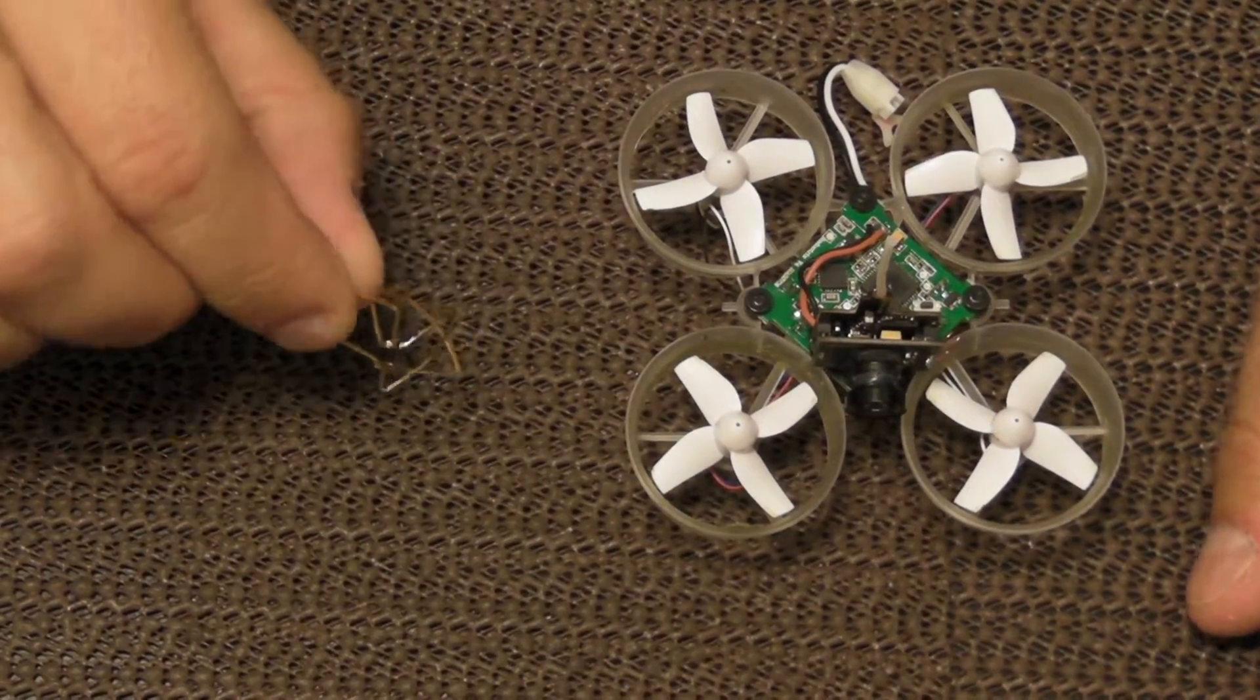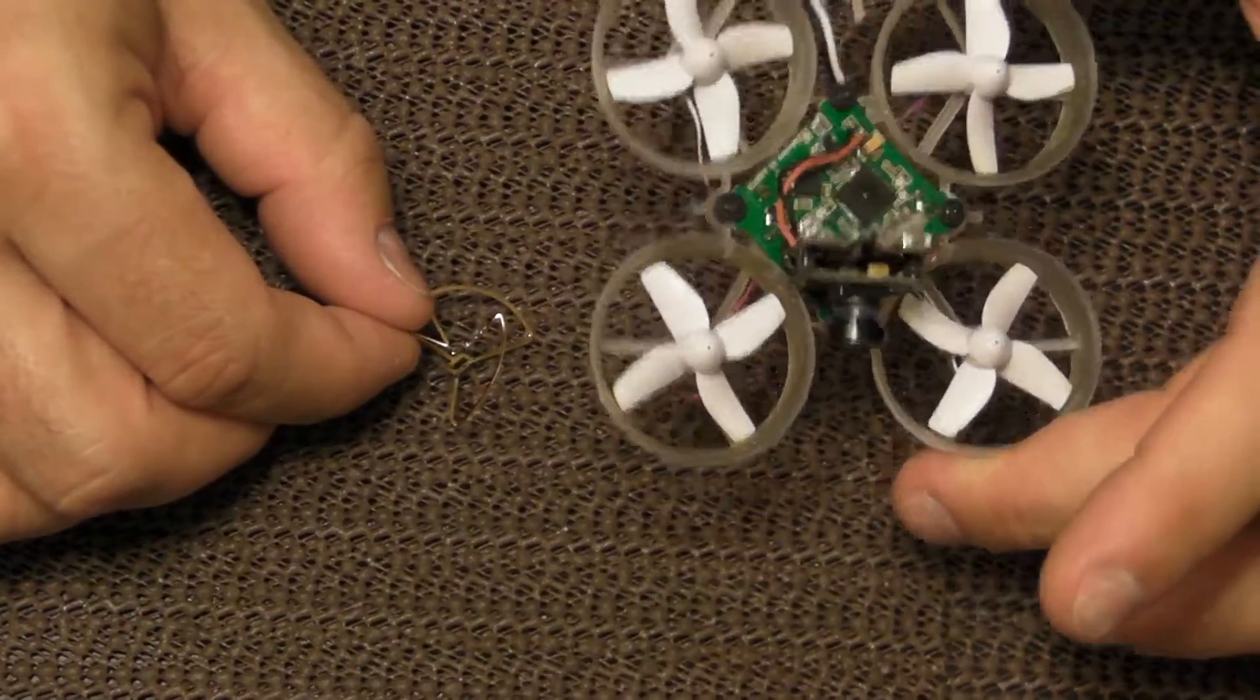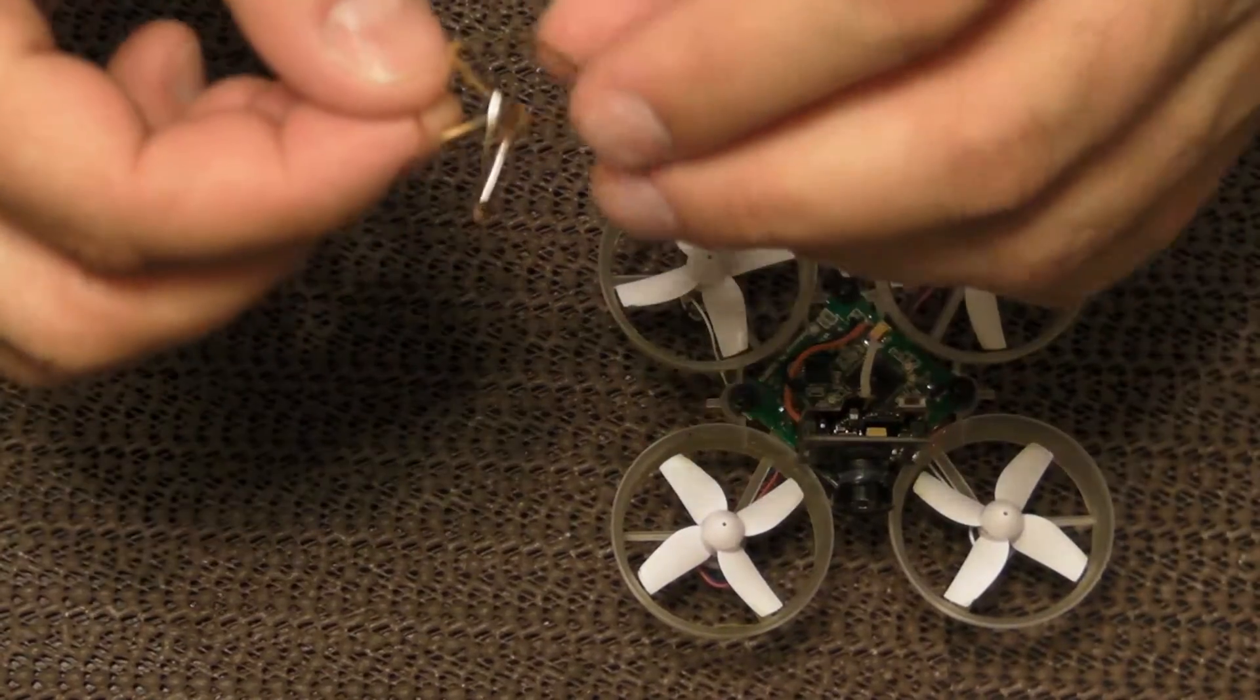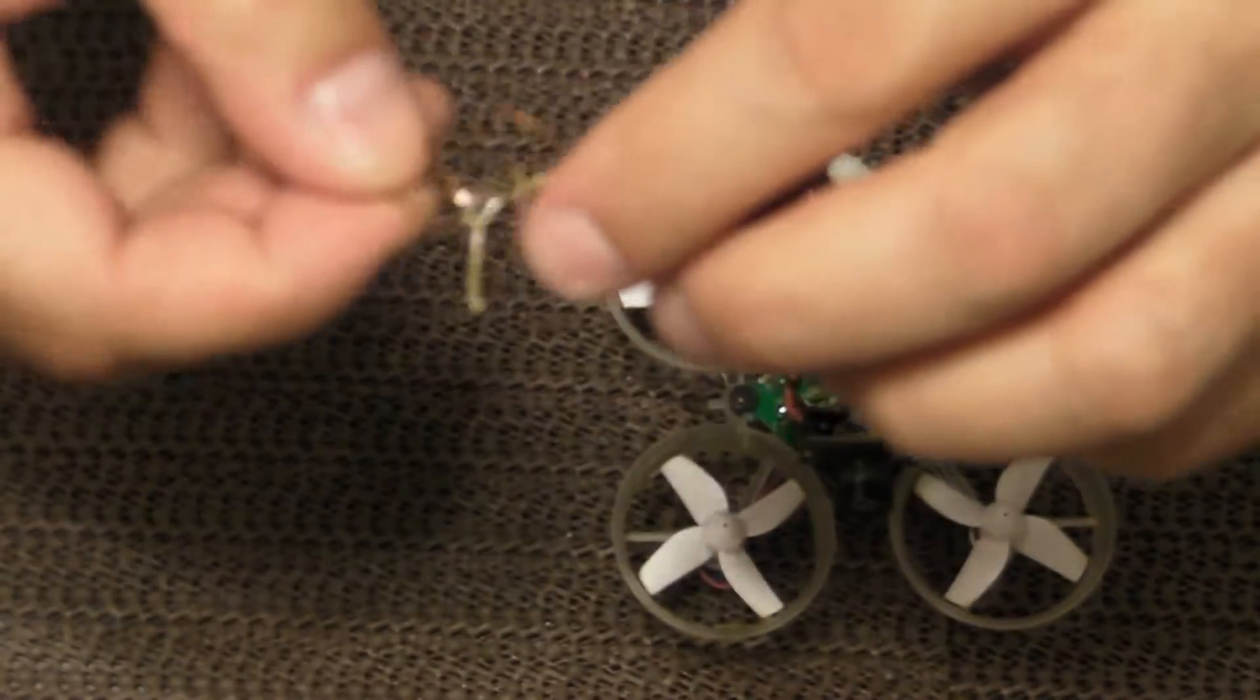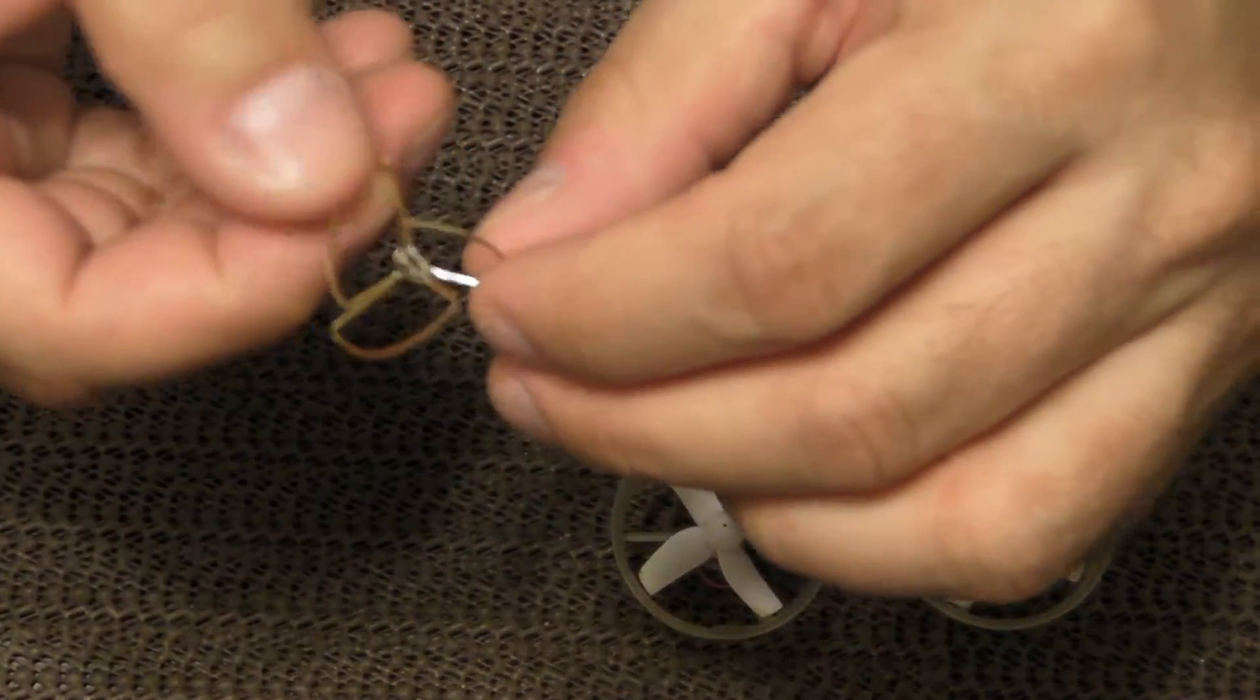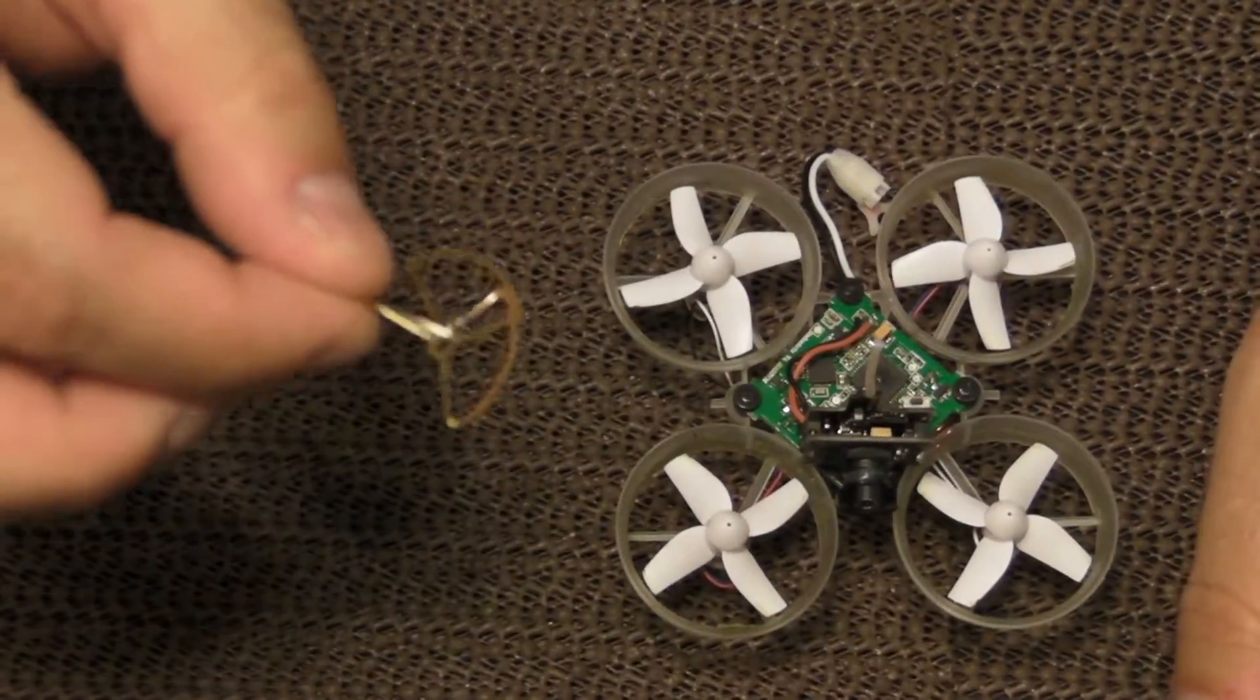After numerous crashes—if you have one of these for FPV, you know these things take a beating—the antenna would bend back and forth repeatedly, and I've had to solder it a couple of times to repair it, which is not a problem.